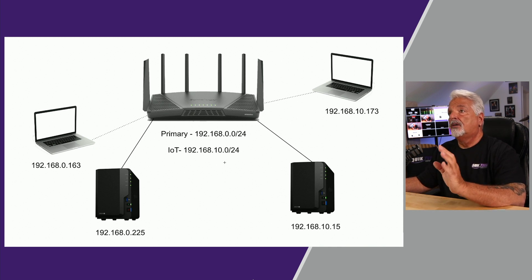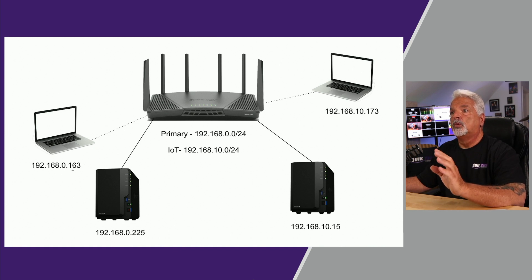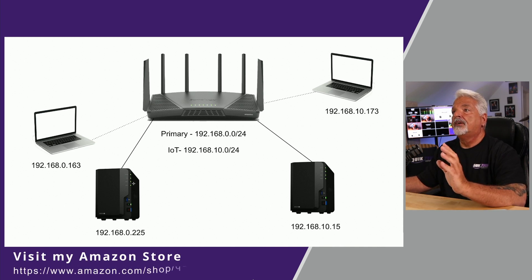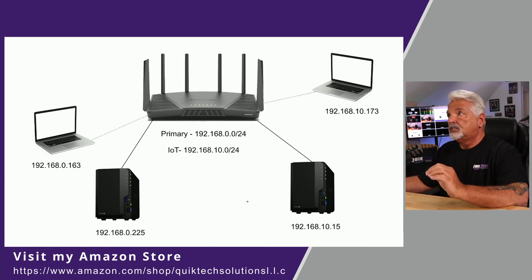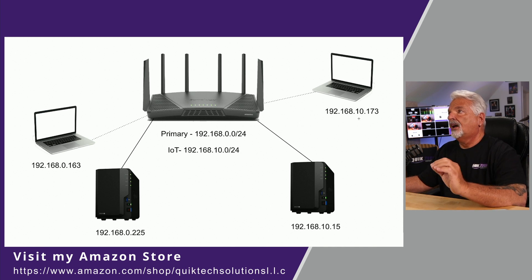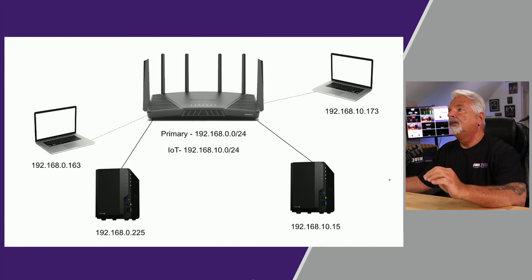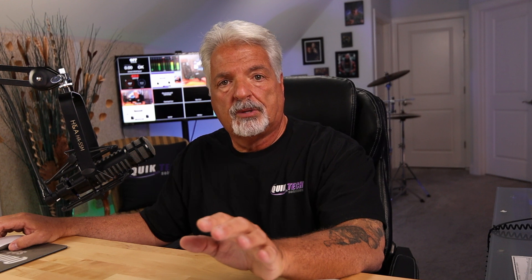I have devices on both networks. On the primary network there's a laptop wirelessly connected at 0.163 and a Synology NAS hardwired at 0.225. On the IoT network there's another laptop wirelessly connected at 10.173 and another Synology NAS hardwired at 10.15. This is what we're going to work with to explore the firewall rules.